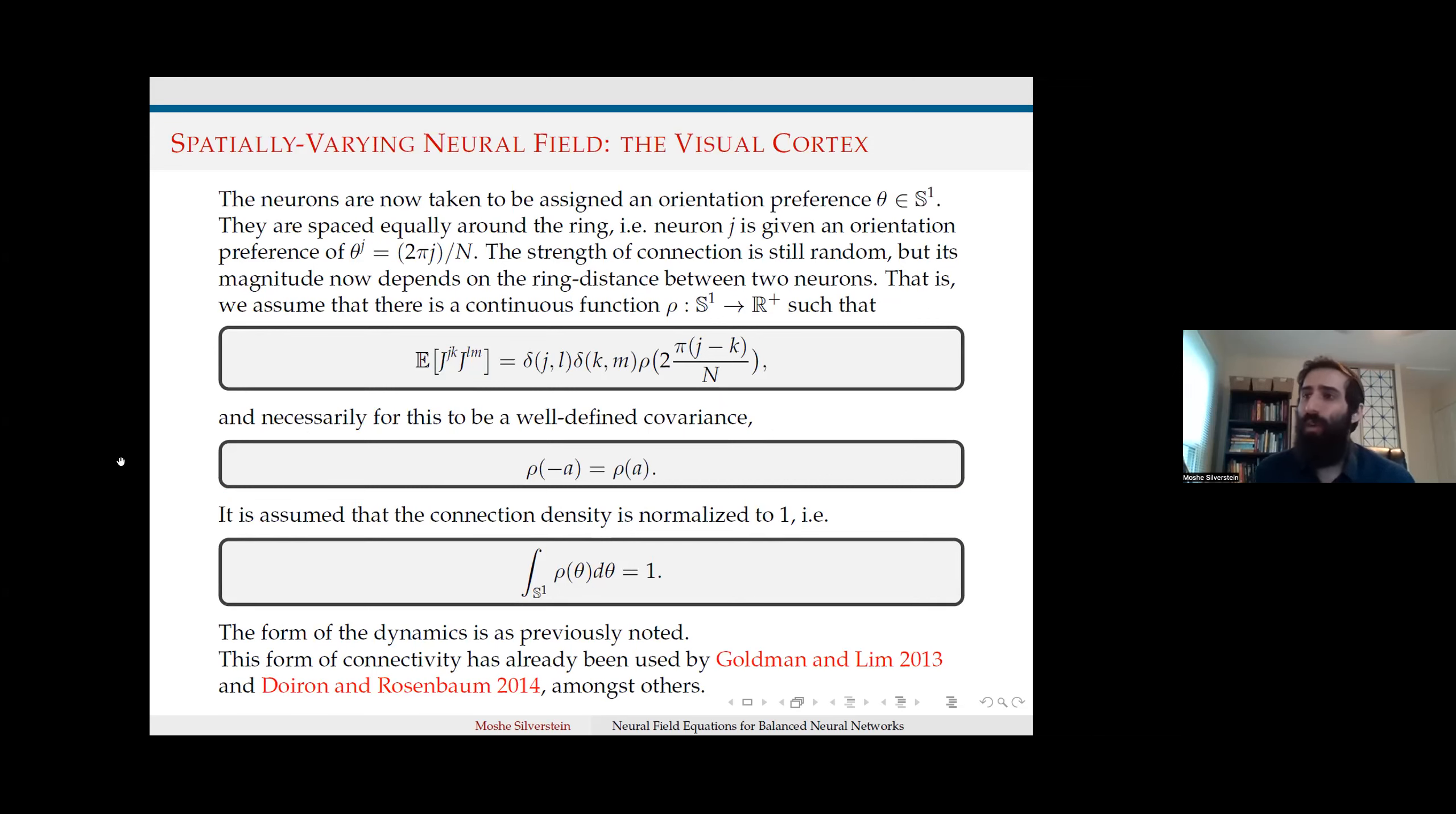A big part of our work is that this simple system can be extended to the spatially heterogeneous case. We introduce a new spatial variable on a range with a theta term that associates the spatial dependence of the variance, which we require to be symmetric for covariance. This is similar to work done by Goldman and Lindeberg in 2013 and Doiron and Rosenbaum in 2014. I know Dr. Rosenbaum is speaking after me, so I hope I'm representing things correctly.